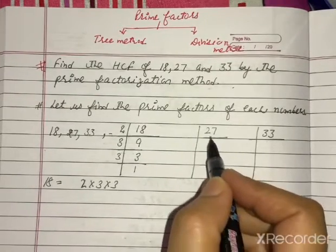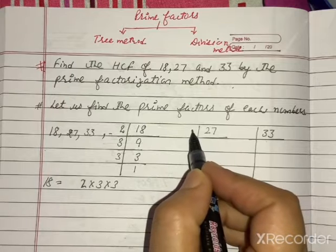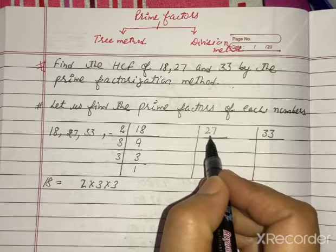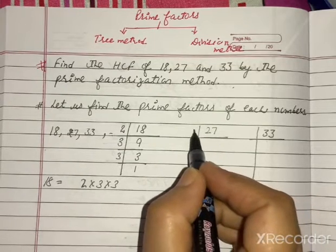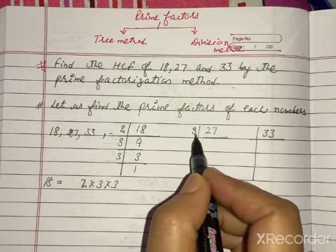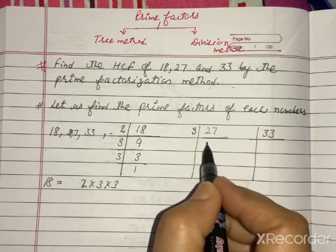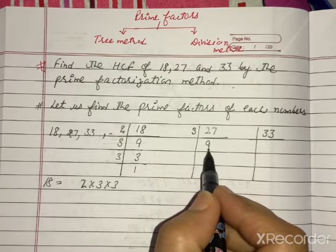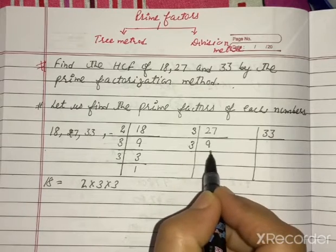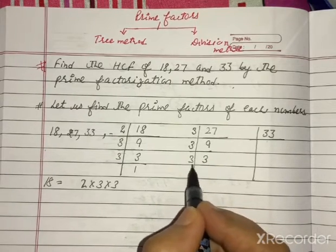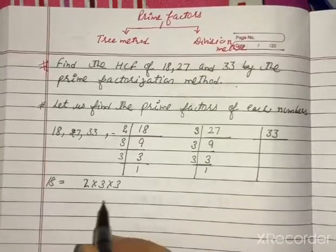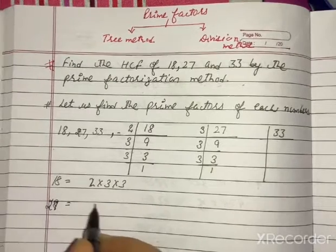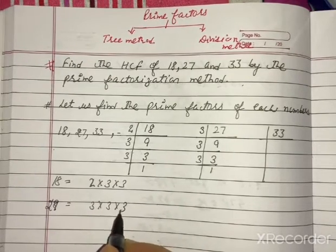Now for 27. We can try starting with 2, but 27 is not exactly divisible by 2, so we start with 3. In the table of 3, we have 3 nines are 27. Again divide by 3: 3 threes are 9. So the prime factors of 27 are 3 × 3 × 3.